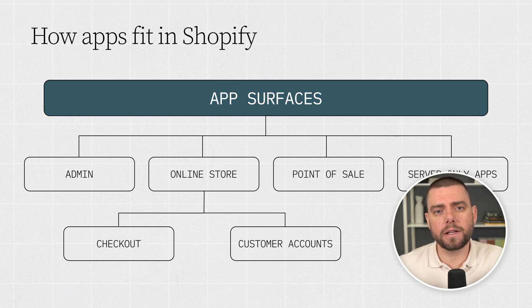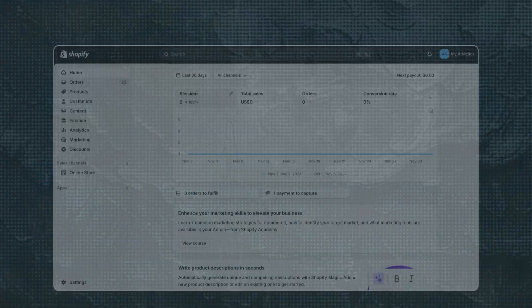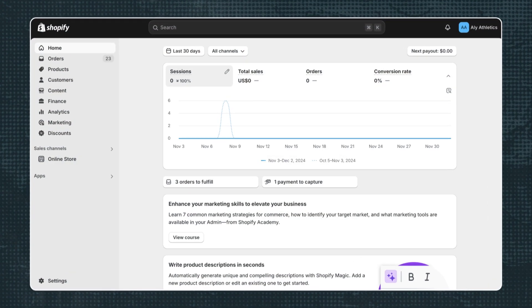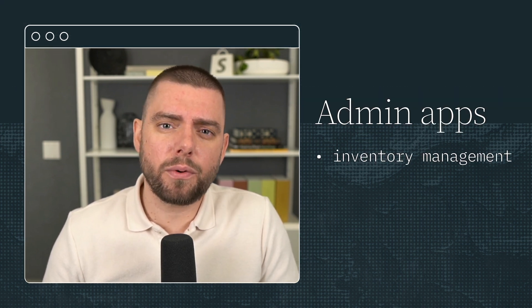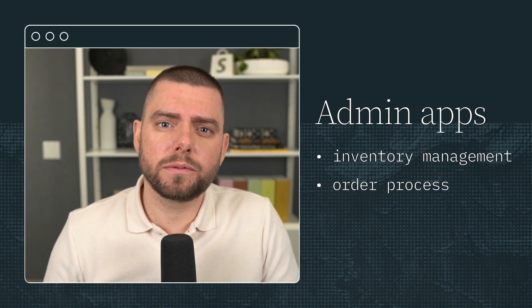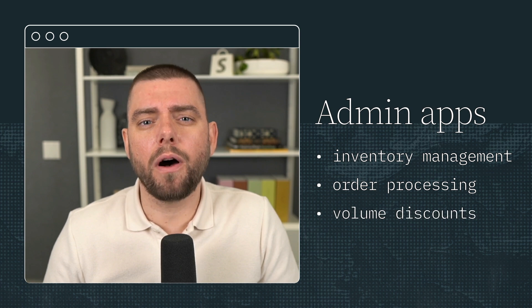Let's take a look at some examples of surfaces. First up, the Shopify admin. This is where merchants configure their store and manage their businesses. Admin apps help merchants with store operations, like inventory management, order processing, or volume discounts.